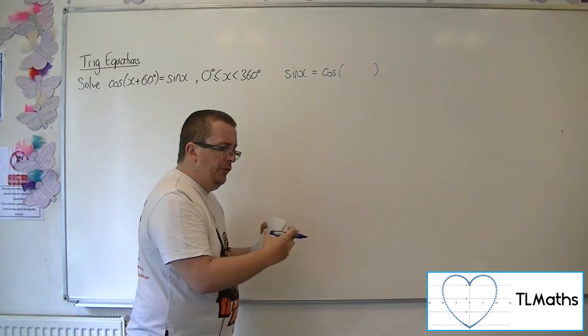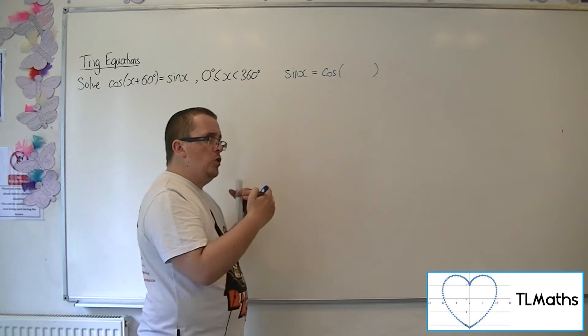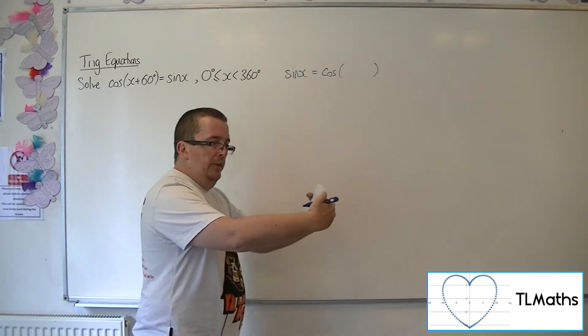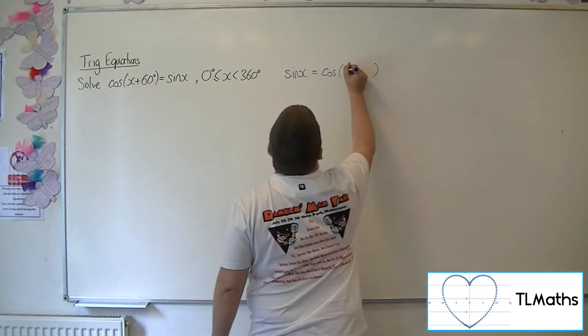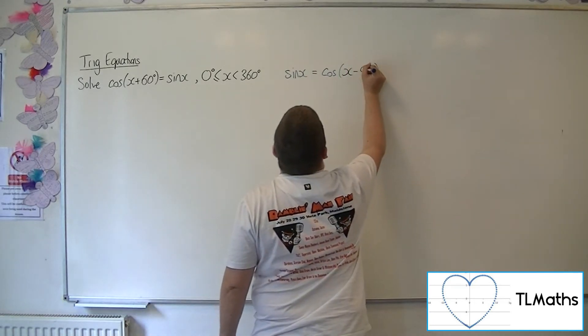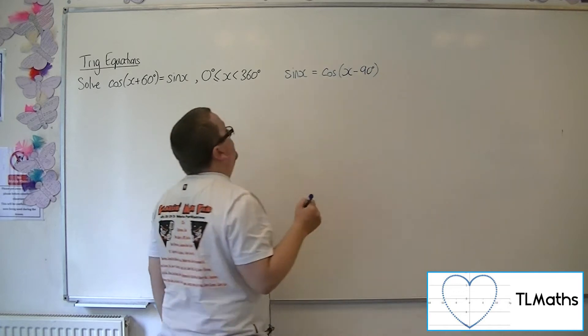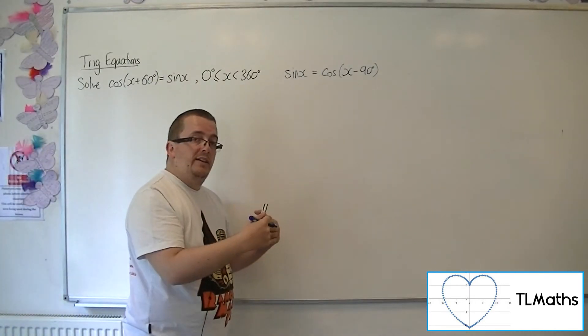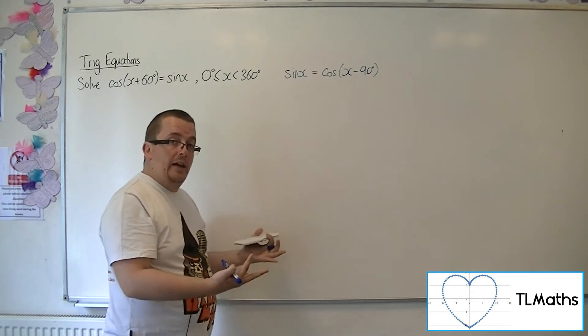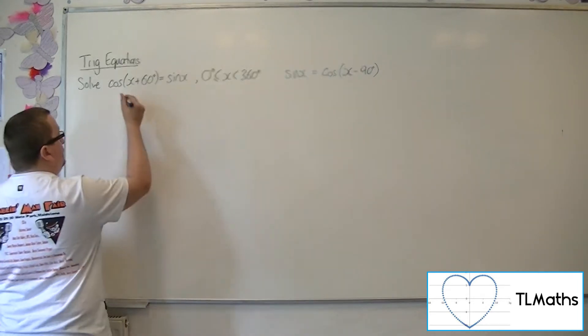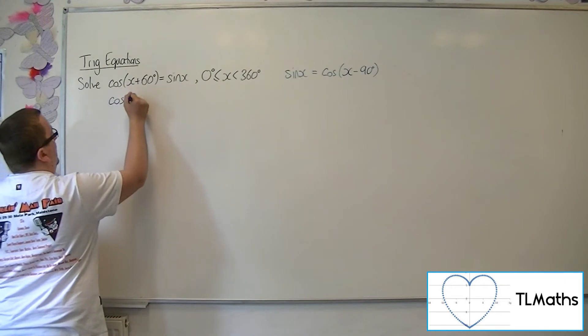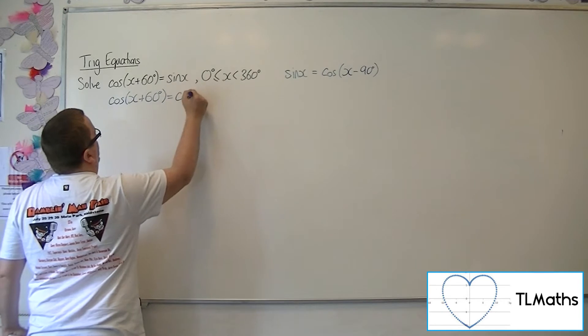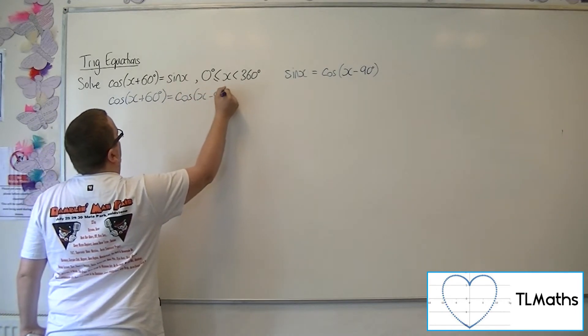Cosine to sine would require a 90 degree shift to the right. So this would mean replacing the x with x minus 90. So cos(x - 90) is sin(x). So you can replace the sine x in the problem with cos(x - 90).